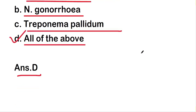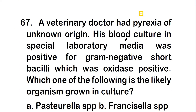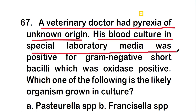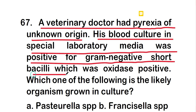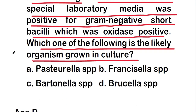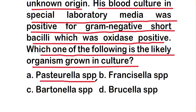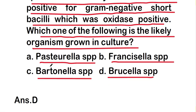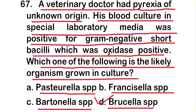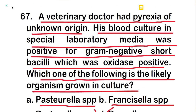The next question: a veterinary doctor had pyrexia of unknown origin. His blood culture on special laboratory media was positive for gram-negative short bacilli which was oxidase positive. Which of the following is the likely organism grown in culture? Options are Pasteurella species, Francisella species, Bartonella species, or Brucella species. The right answer is option D, Brucella species.